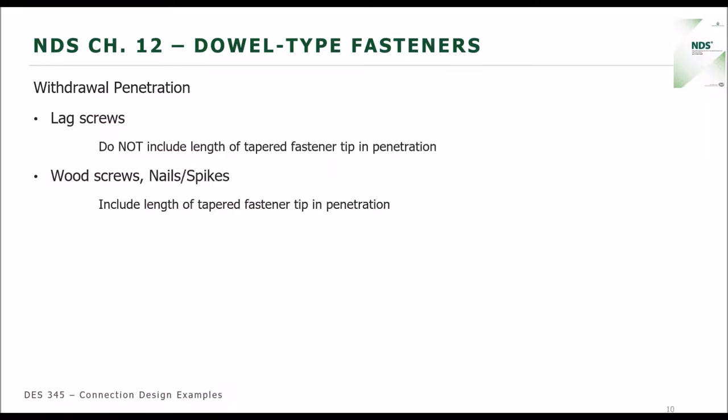When we talk about withdrawal penetration, there are some things that are a little different depending on the type of fastener. One of those deals with fasteners that have tapered tips — so that includes nails and spikes, lag screws, and wood screws. When we calculate the penetration for lag screws, we do not include the length of the tapered fastener tip in that penetration. However, for wood screws and nails and spikes, we do include the length of the tapered fastener tip in the penetration.